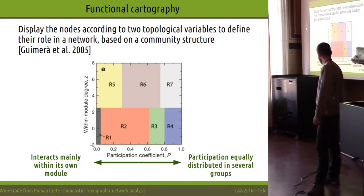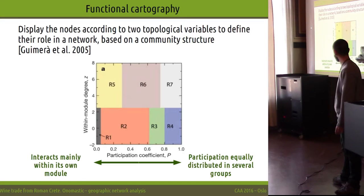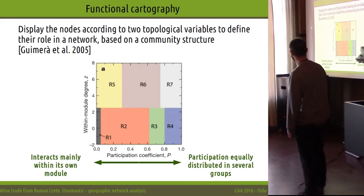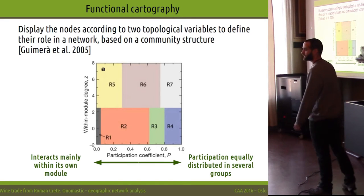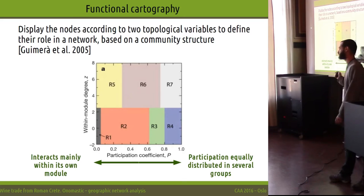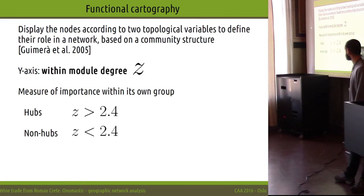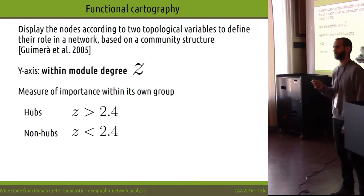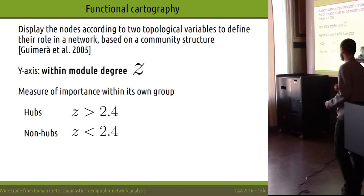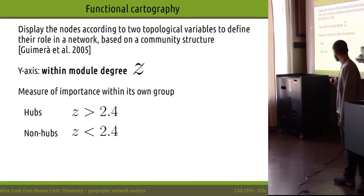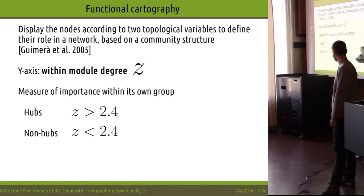When close to 0, interactions are within its own group; when close to 1, interactions span many communities. These regions are defined in the original paper. Introducing this cartography and varying these regions — they are not fixed across periods. On the y-axis, we have a measure that tells us whether nodes are considered hubs or how important they are relative to their own community.